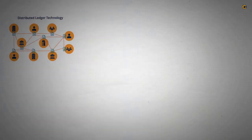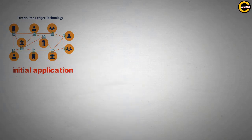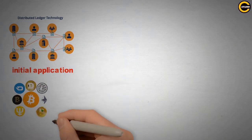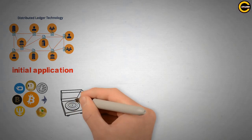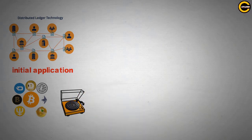What is Distributed Ledger Technology, DLT? This technology's initial application in blockchain started with Bitcoin, where it's used to record transactions and ensure their validity. This distributed ledger technology is the system behind the popular buzzword blockchain.